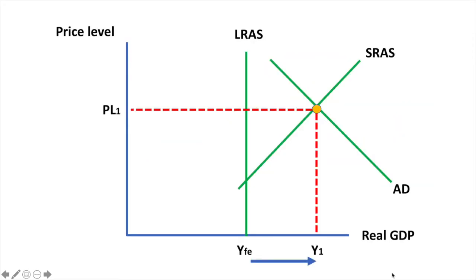On the aggregate demand-aggregate supply diagram, it is demonstrated like this. Suppose this economy is in short-run equilibrium at Y1. This is beyond the potential of the economy at YFE. As a result, there is a positive output gap from YFE to Y1.